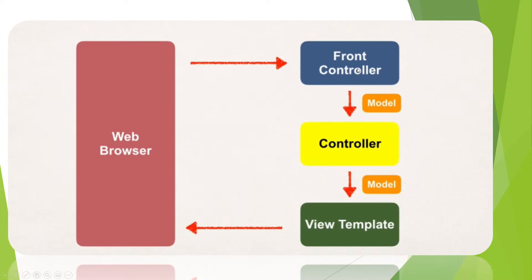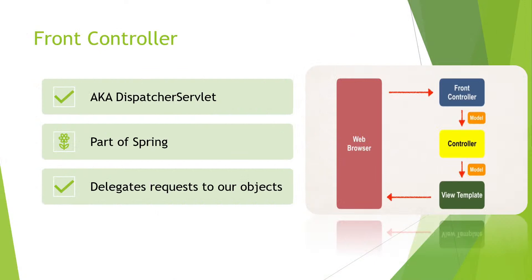We have a web browser that makes some requests to our web app. We have what's called a front controller — then a model, a controller, and in the end the view template. The view template is our JSP page. The front controller, or dispatcher servlet, is a part of Spring that's used only to delegate requests to our objects. It takes the request from the browser and delegates it back to the controller. Spring has already given us this — we don't need to write it. This one is already a part of Spring. But you need to define the dispatcher servlet in config, which is super boring and very error prone.